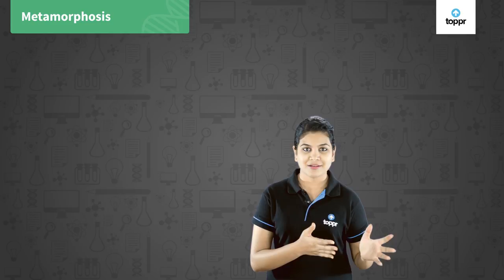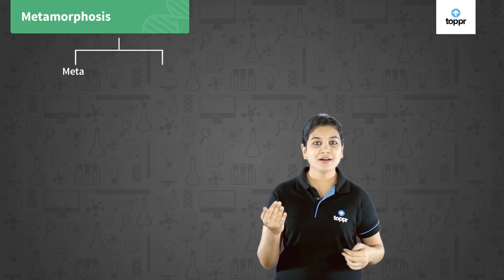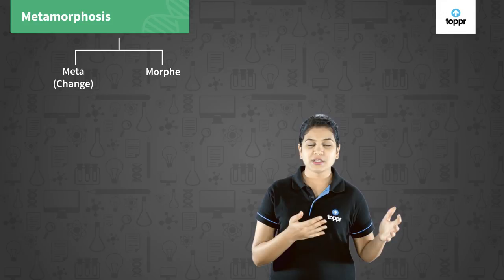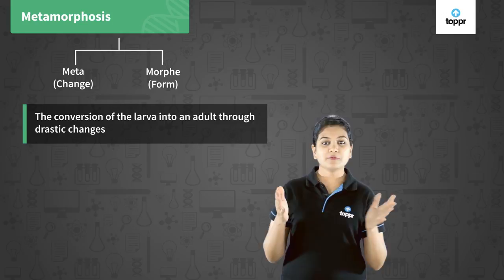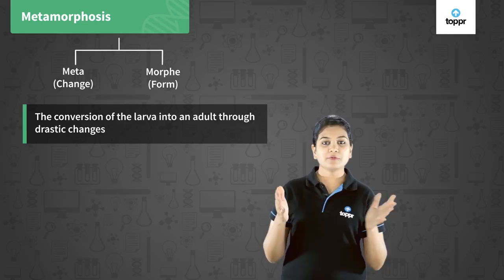These drastic changes are what we call metamorphosis. Metamorphosis is taken from two words: meta and morphosis, where meta means to change and morph means the form. So we can simply define metamorphosis as the conversion of a larva into an adult through drastic changes.